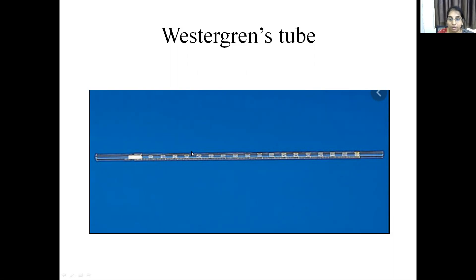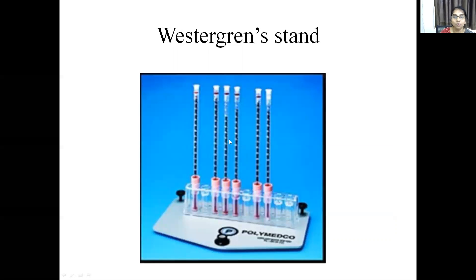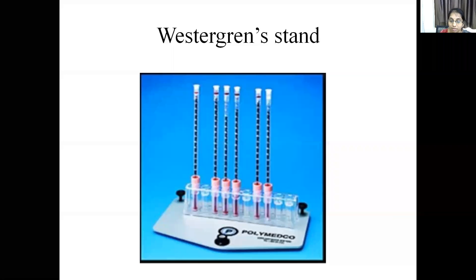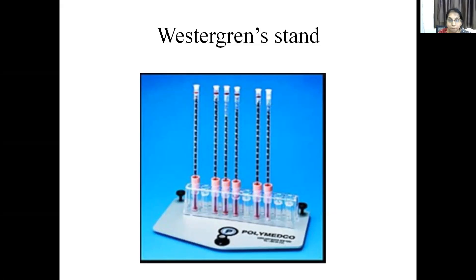This tube is used for measurement of ESR, erythrocyte sedimentation rate. It is placed in the Westergren stand and must be kept strictly vertical. If not vertical, there may be a wide variation in the ESR. It must be kept at normal room temperature of 28 to 30 degrees. These are the prerequisites: vertical placement and maintained temperature. Any slanting position may give false results.